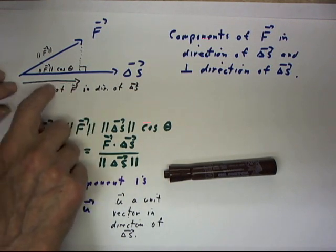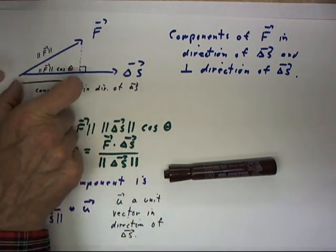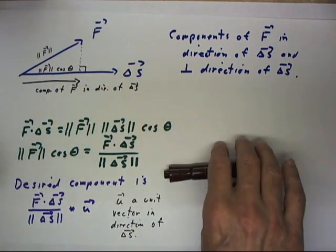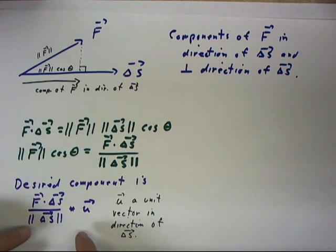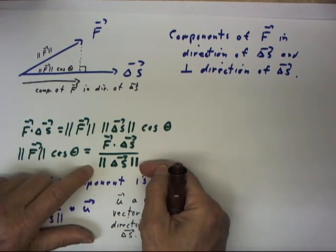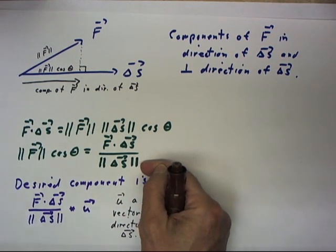Now we're trying to find this vector, the component of f in the direction of delta s, and we've determined that this component will have a magnitude equal to the magnitude of f delta s over the magnitude of delta s.